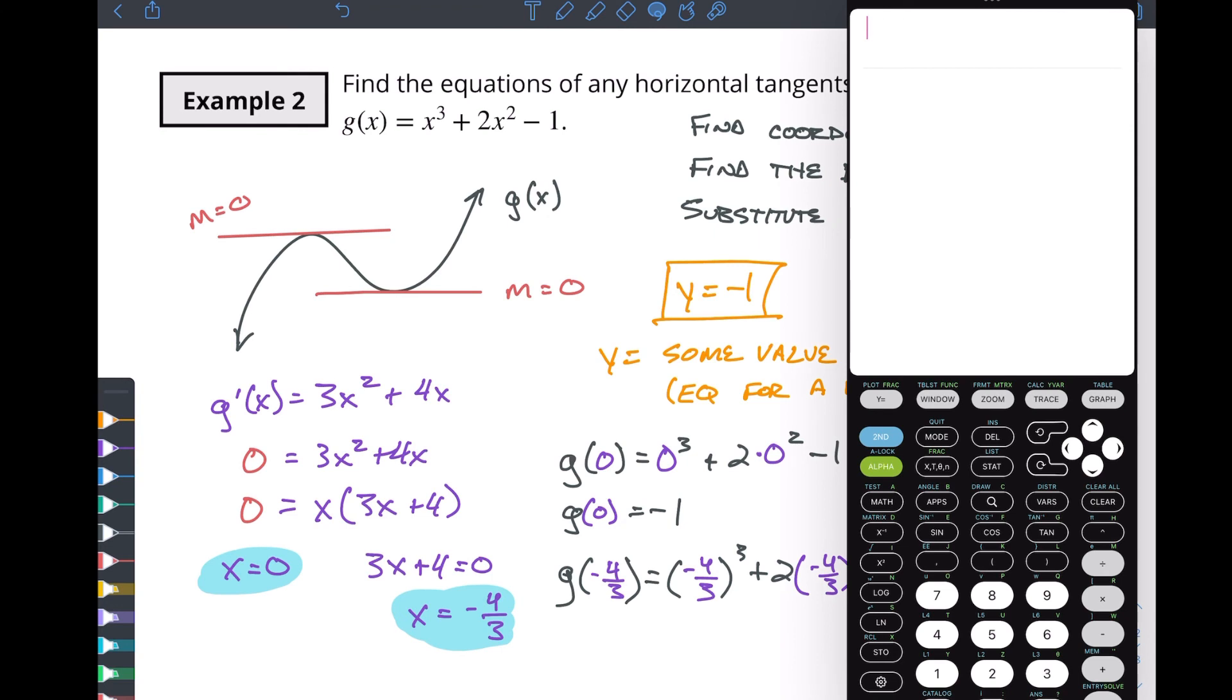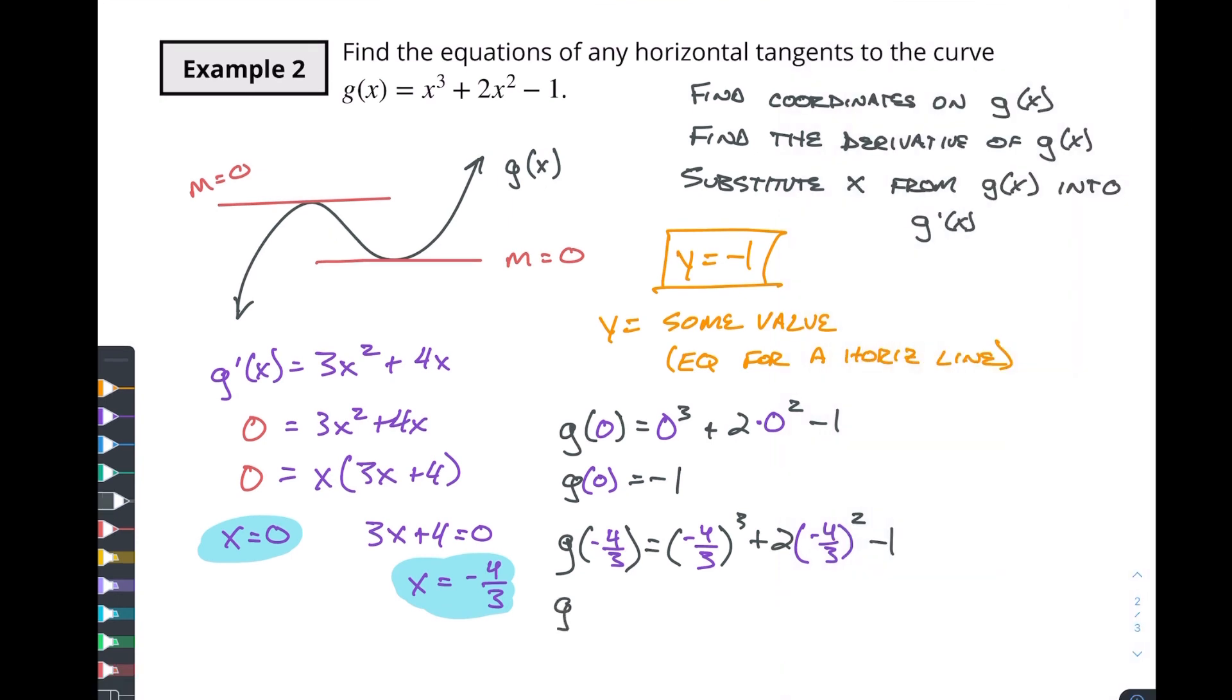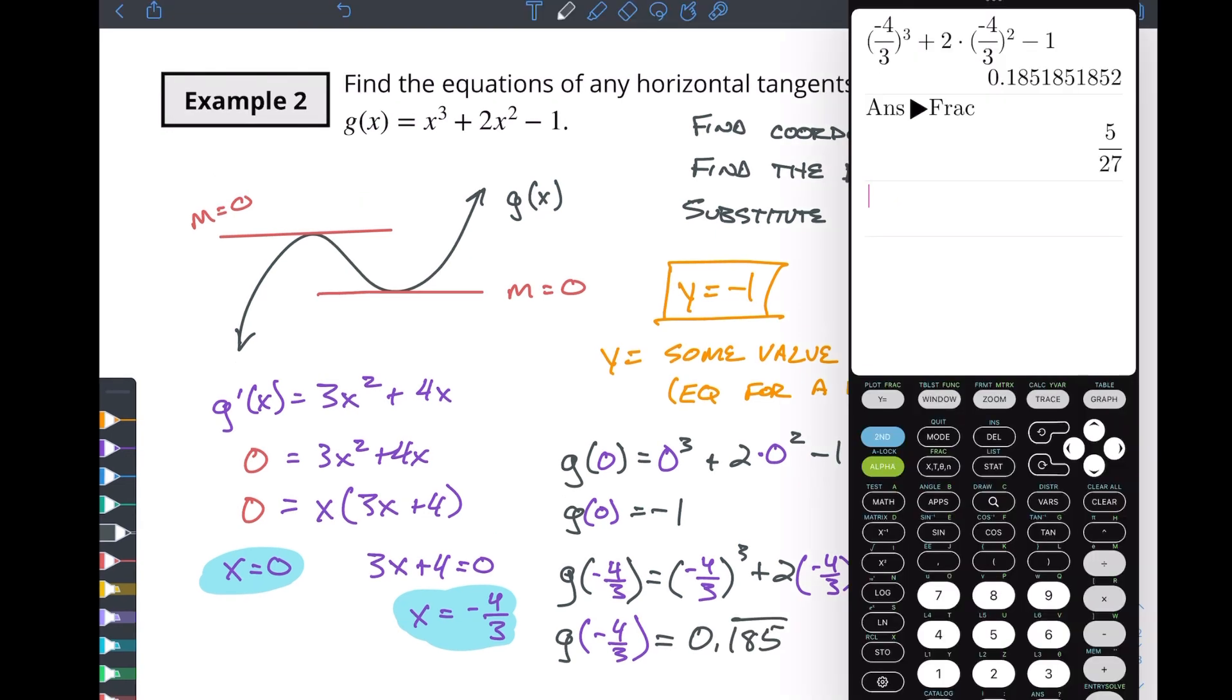And here's our function. So we're going to do parentheses and I'm going to put in my fraction negative four thirds. And I'm going to make that raised to the power of three plus two times, parentheses, my fraction again, negative four thirds, and that's going to be raised to the squared option there. And then we're going to do minus one and we end up with 0.185 repeating. This is going to be g of negative four thirds is equal to 0.185 repeating. That comes out to a nice fraction as well.